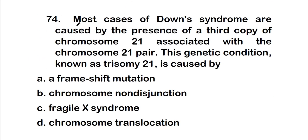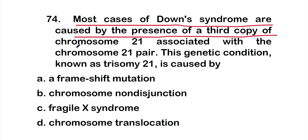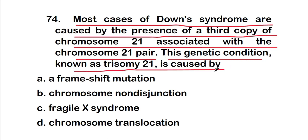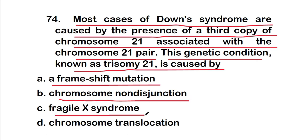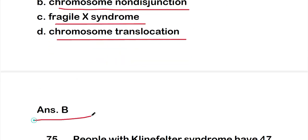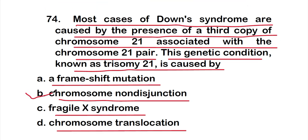Question 74: most cases of Down syndrome are caused by the presence of a third copy of chromosome 21. This genetic condition, known as trisomy 21, is caused by — Option A: a frameshift mutation, Option B: chromosome non-disjunction, Option C: fragile X syndrome, Option D: chromosome translocation. The right answer is Option B — chromosome non-disjunction.